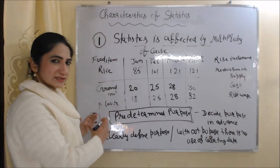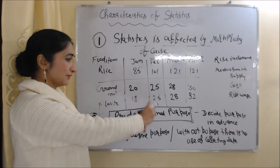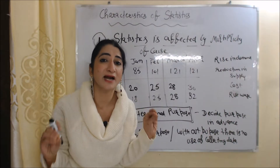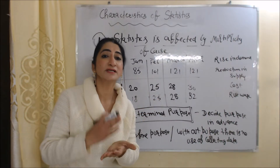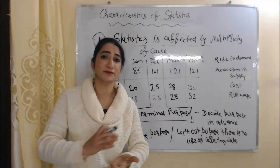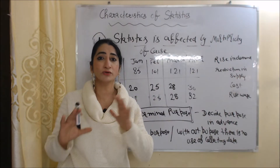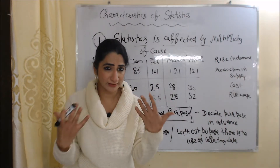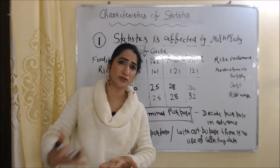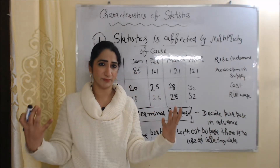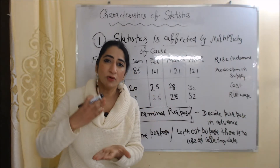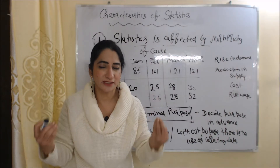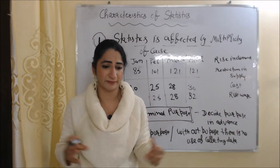The second characteristic is predetermined purpose. Whenever you collect data, you must decide your purpose in advance — you must have a clearly defined purpose. Without defining a purpose, there is no use in collecting data. For example, my purpose of collecting data is to find out customer needs so that I can modify my product accordingly, and I will only collect data that is related to my purpose.